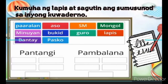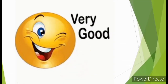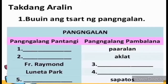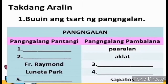Ngayon, nais kong kumuha kayo ng lapis at sagutin ang sumusunod sa inyong kwaderno. Una, ang tamang hanay ng pantangi at tamang hanay ng pambalana. Piliiin ang mga salita sa kahon at ilagay sa angkop na hanay. Magaling! Takdang aralin: buuin ang chart ng pangalan. Sa unang hanay ay makikita ang pangalang pantangi, at sa kabilang hanay ay makikita ang pangalang pambalana.